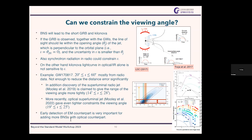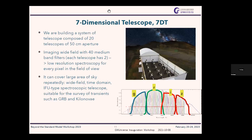Early detection of the electromagnetic counterpart of binary neutron star mergers is very important, because after the merger the brightness fades very rapidly. If you don't discover the counterpart early, you lose the opportunity. With this in mind, we are constructing a telescope system called the 'Seven-Dimensional Telescope.' It measures many different things simultaneously — that is why we call it seven-dimensional.